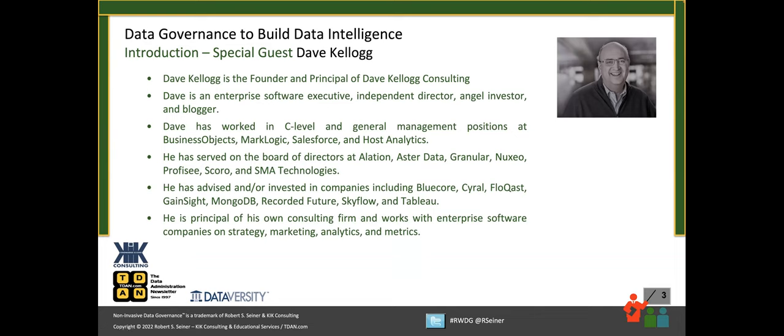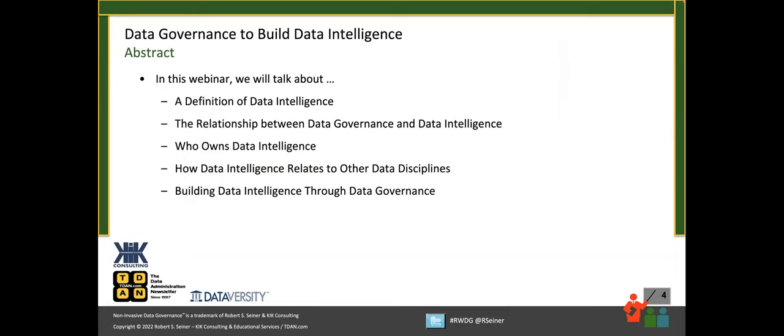Let's get into the topics we're going to discuss. First, we'll provide a definition of what data intelligence is — we're all hearing that term so often from vendors and articles. We want to put our arms around what exactly data intelligence is. Then, since this is a Real World Data Governance series, we'll talk about the relationship between data governance and data intelligence, who has responsibility for data intelligence, how it relates to other disciplines, and finally, building data intelligence through data governance.